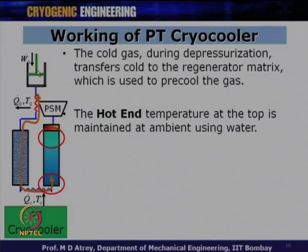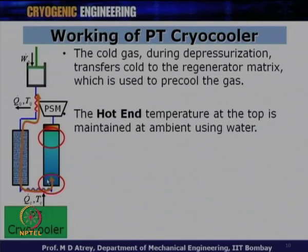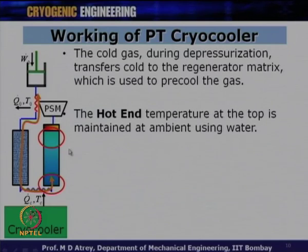This is how the pulse tube cooler works. The pulse tube cooler compresses gas and sets up a temperature gradient across the length of the pulse tube. During depressurization, the gas goes back; the hot end is always maintained at ambient temperature. Thereby, the lower end temperature starts going down — how much it goes down depends on the capacity of the regenerator matrix material to store heat. The major difference is no displacer, and the oscillating gas flow sets up the temperature gradient.